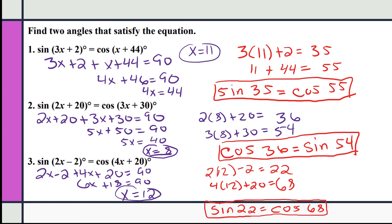For number 2, you should have gotten the cosine of 36 is equal to the sine of 54. And for number 3, you should have gotten the sine of 22 is equal to the cosine of 68.